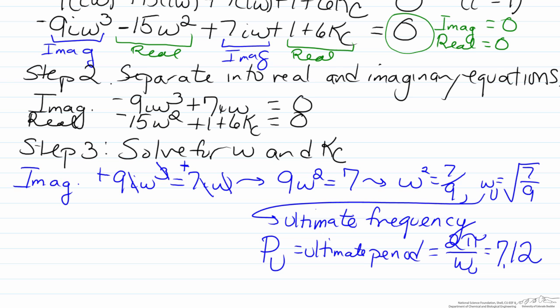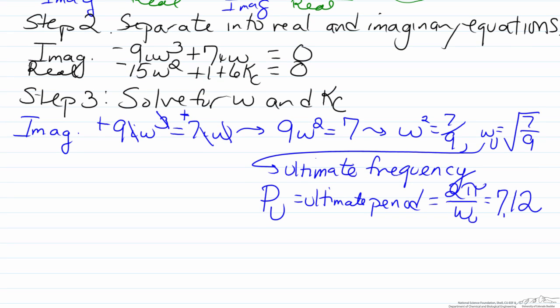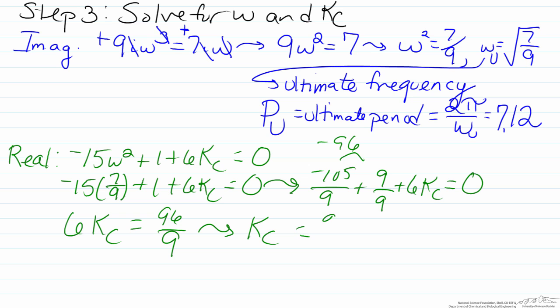So with the knowledge of our ultimate frequency we can then use that to find the kc value, which will put us on that borderline between stable and unstable. We'll have negative 15 omega squared plus 1 plus 6kc equals zero. We can substitute in the fact that omega squared is seven-ninths, therefore kc equals 96 over 54, which is approximately 1.78.